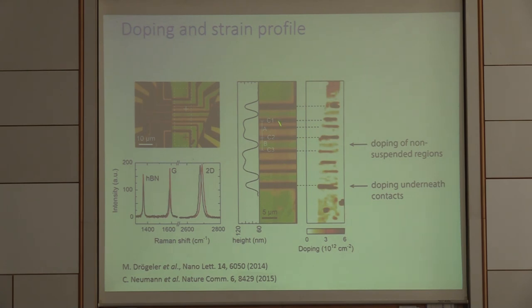And we can now use confocal Raman imaging. Here you see just two Raman spectra from this region and this region here. One can now decompose information taken from the G peak and 2D peak to extract information on doping and strain. I will not have time to go into these details, but it's a very powerful technique because we can really image such structures.